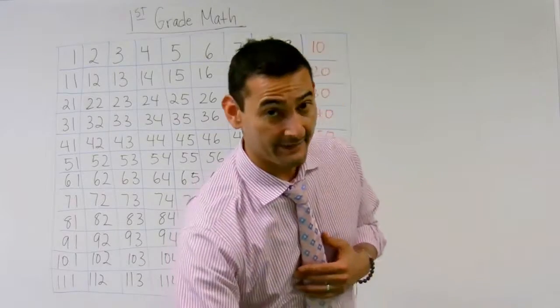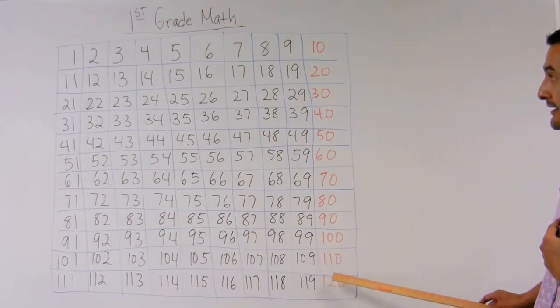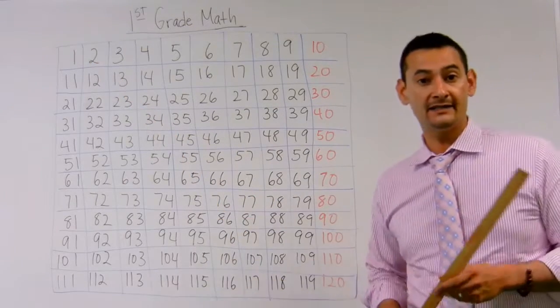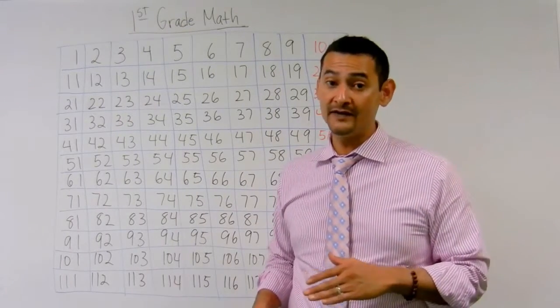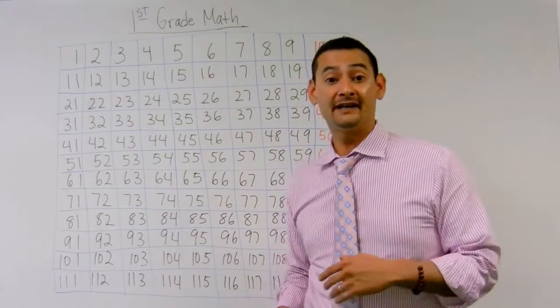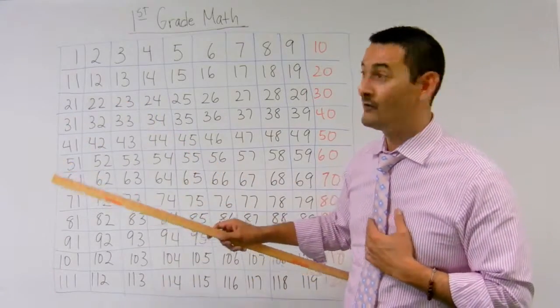As you can see behind me, I've got a numbers chart that goes from 1 all the way to 120. So let's go ahead and let's count these together, and you should be actually outstanding at doing this because in kindergarten, you learn how to count to 100. So we just have to learn 20 more. So let's go ahead and get started. Count with me.